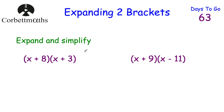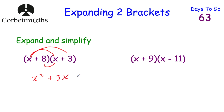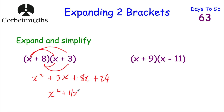Now there are some questions for you to try. For the first one — (x + 8)(x + 3): x times x is x squared, x times 3 is plus 3x, 8 times x is plus 8x, and 8 times 3 is plus 24. Simplifying: 3x plus 8x is 11x. So the answer is x squared plus 11x plus 24.